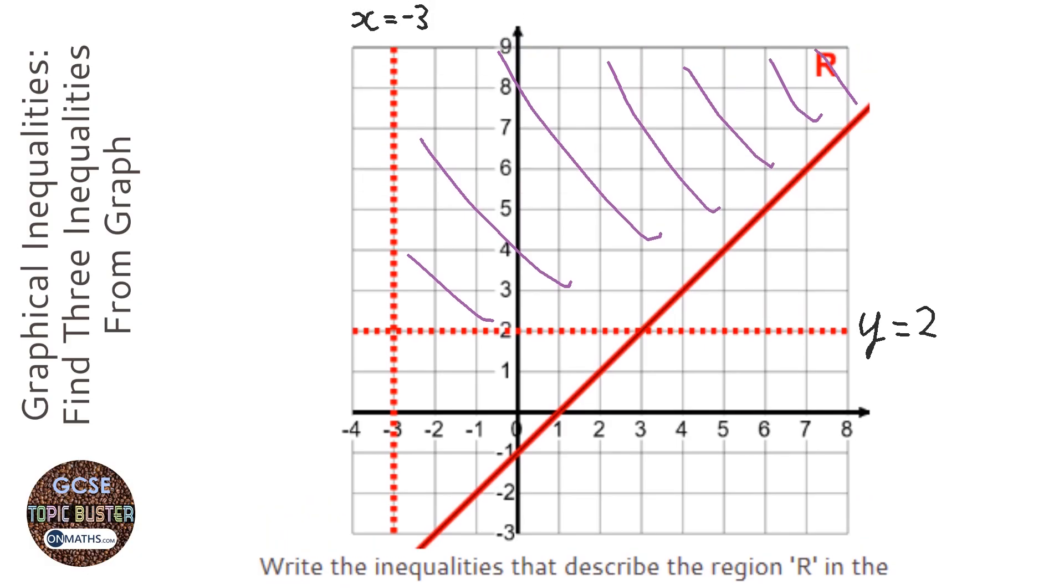Ok, this last line. Well this last line goes through the axis at minus 1 and for every one it goes to the right it goes up 1. So the equation of it is y equals x minus 1. Now this is a bit more difficult to work out whether it's greater than or less than. So we pick a coordinate, any coordinate in the region we want. And let's try greater than.